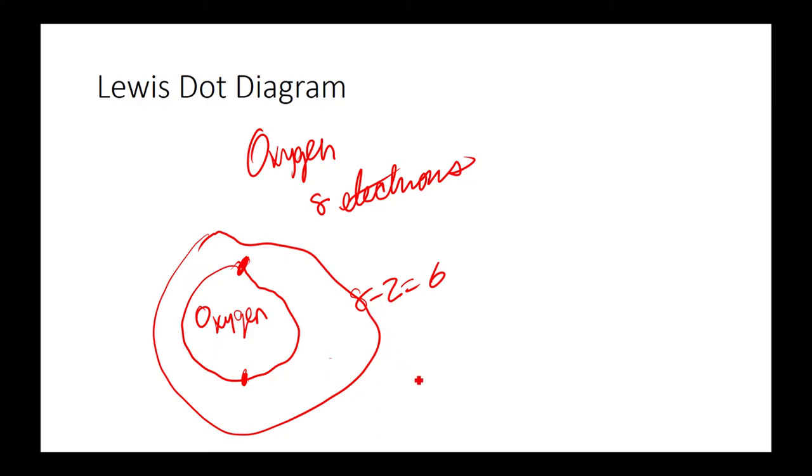So the outer shell, this shell, is not stable. We call those not stable electrons valence electrons. And to draw the Lewis dot diagram, just write the symbol. Then one, two, three, four, five, six, which is the Lewis dot diagram. You basically write the element and then how many valence electrons it has with dots.